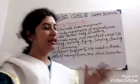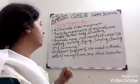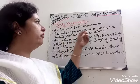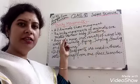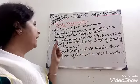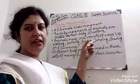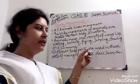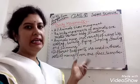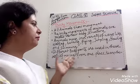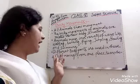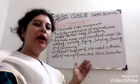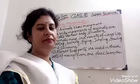Our second topic is body movement. All animals show movement. The body movement of animals is related to their body structure. Animals move in a variety of ways like walking, running, flying, swimming, jumping, crawling, etc. Different body parts are used in these acts of movement to go from one place to another.